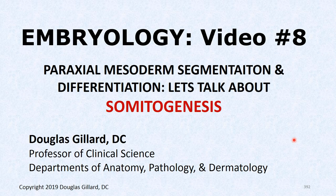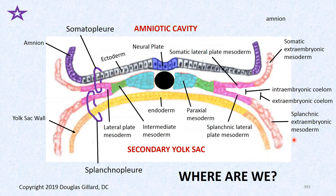Welcome back to another embryology video — we're on number eight. We're going to talk about somitogenesis. The somites are super important; they're formed from segmentation of the paraxial mesoderm. We're going to form the axial skeleton, or at least talk about the primordial axial skeleton, meninges, and all the muscles of the trunk.